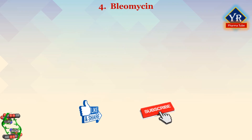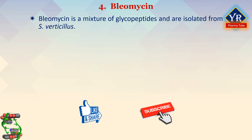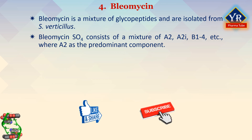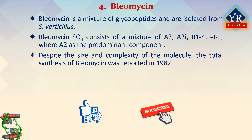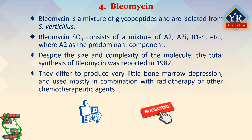Bleomycin is a mixture of glycopeptides, thus they are complex molecules. They are isolated from the microorganism Streptomyces verticillus. The preparation known as bleomycin sulfate consists of a mixture of glycopeptide bases, namely A2, A2I, B2, etc., where A2 is the predominant component. Despite the size and complexity of the molecule, particularly with regard to the number of chiral centers, the first total synthesis of bleomycin was reported in 1982. Bleomycins differ from other chemotherapeutic agents in that they produce very little bone marrow depression and are routinely used in cancer chemotherapy, mostly in combination with radiotherapy or other chemotherapeutic agents.